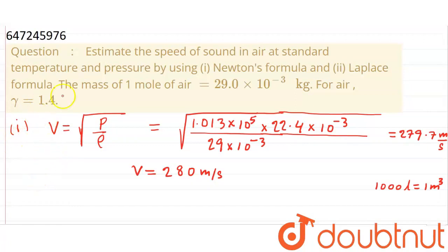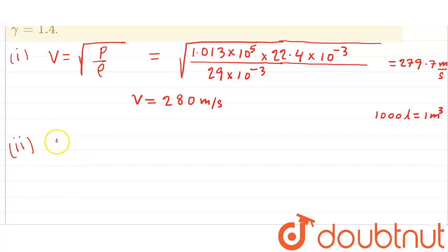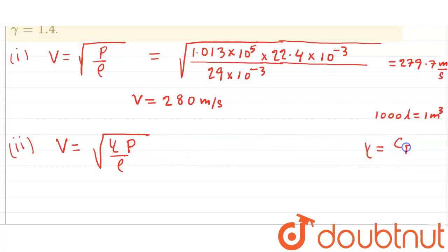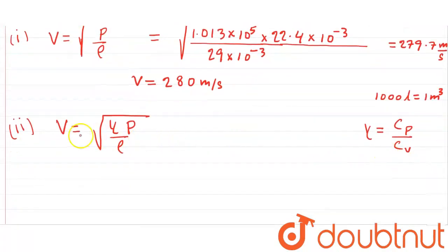Now we will find the speed of sound using Laplace's formula — this is the second part. Laplace did not consider the process as isothermal. He assumed the formation of compression and rarefaction during propagation of sound waves as adiabatic, and gave the formula: V = √(γP/ρ). Here gamma is the ratio of molar specific heat at constant pressure to that at constant volume. For air, gamma = 1.4, as given. So we just need to substitute here.